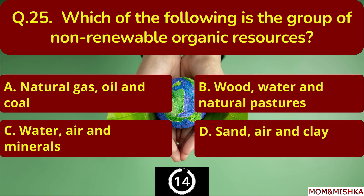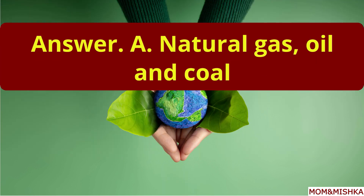Which of the following is a group of non-renewable organic resources? It's option A — natural gas, oil, and coal.